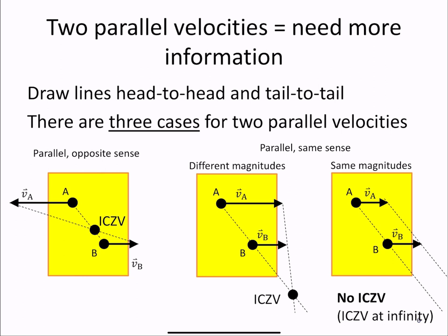If the two points have the same velocities, then essentially there's no ICZV, or we can think of the ICZV being at infinity because the object is not rotating.